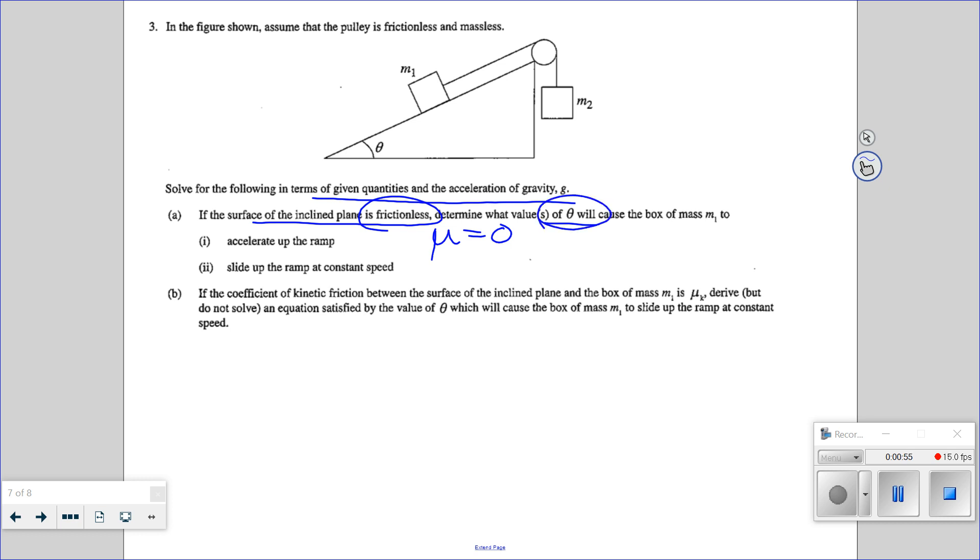We'll cause the block of mass one to accelerate up the ramp, constant speed, etc. Okay, so even if I don't need to do that, I want a free body diagram mass one.